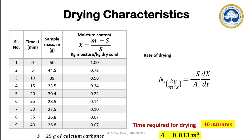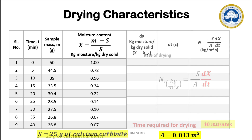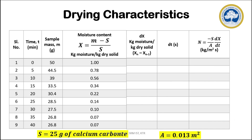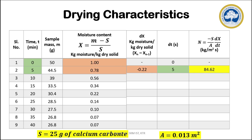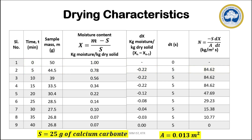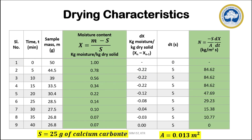Next, we calculate the rate of drying using the formula, where we already have the values of s and surface area A. We need to calculate dx and dt — the change in moisture content with respect to time. To find dx, we take the difference between consecutive moisture content values; for the first interval it is 0.78 minus 1, which equals −0.22. The time difference dt is 5 minutes. Since we are finding the difference between intervals, we cannot calculate the drying rate for the 0th minute reading.